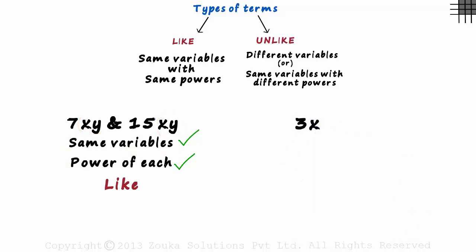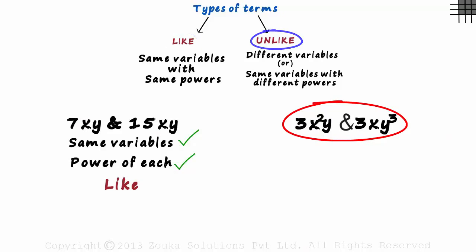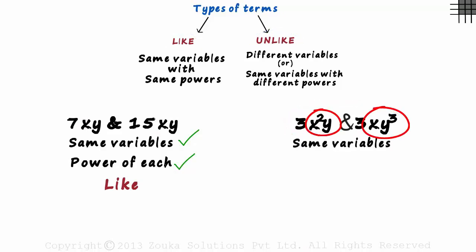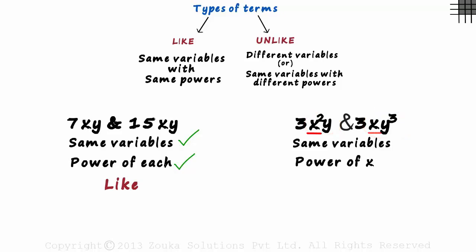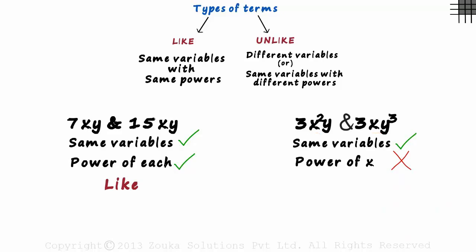What about 3x squared y and 3xy cubed? Are they like or unlike? Both the terms have the same variables x and y. Now let's compare the powers of each variable. The power of x in the first term is 2 and in the second it's 1 — it's not the same. Even though the variables are the same, because the powers are not equal, these are unlike terms. Remember, if the powers of one of the variables is different, the terms become unlike.